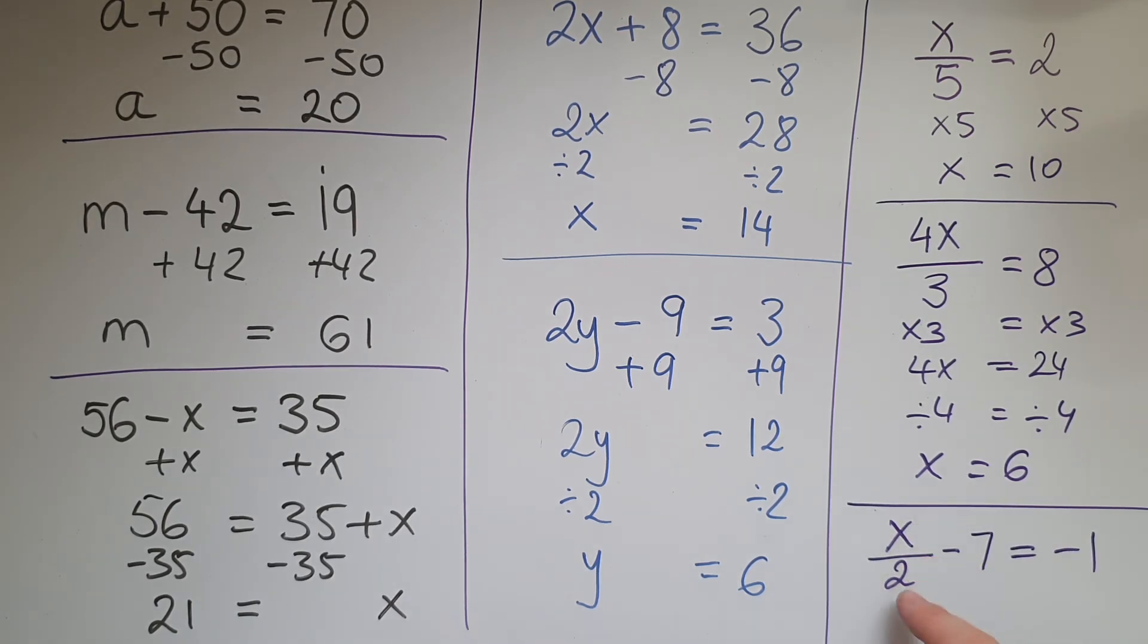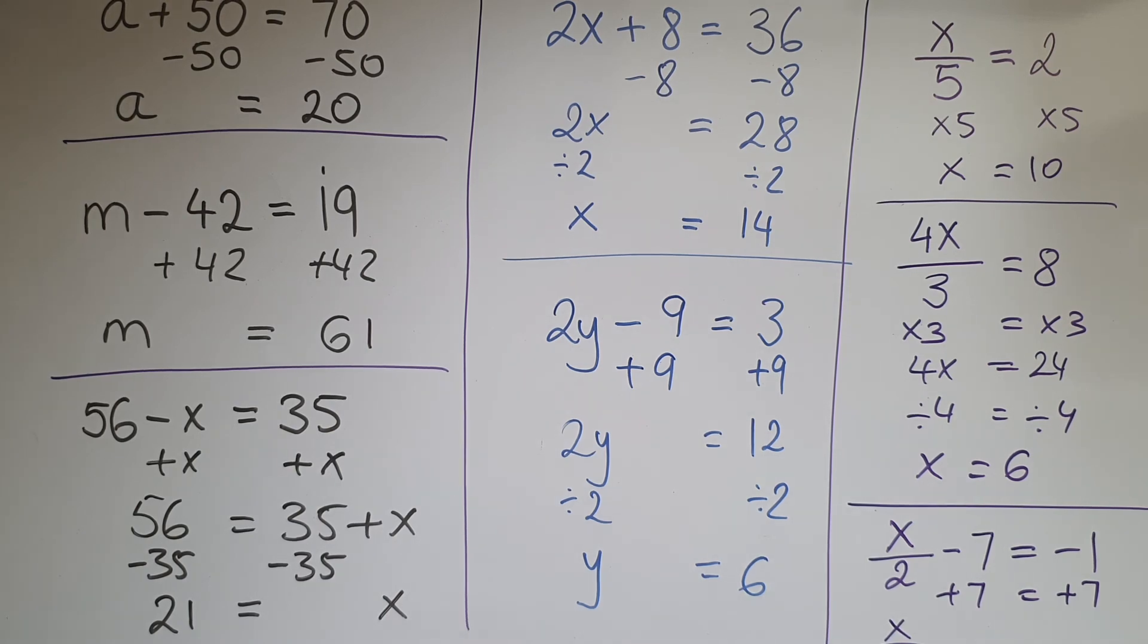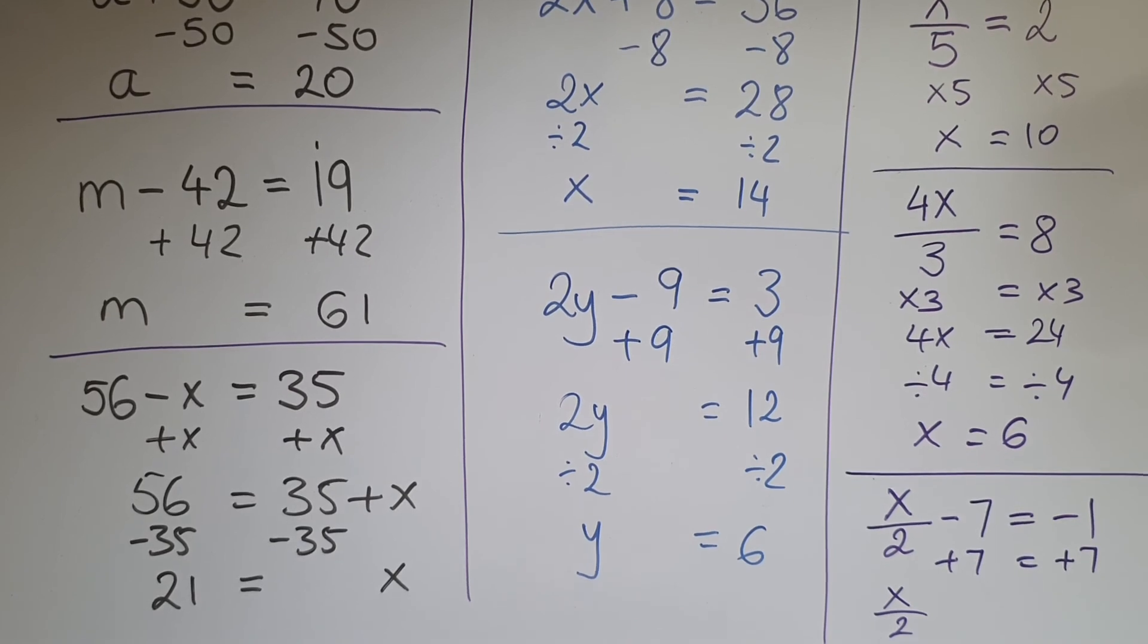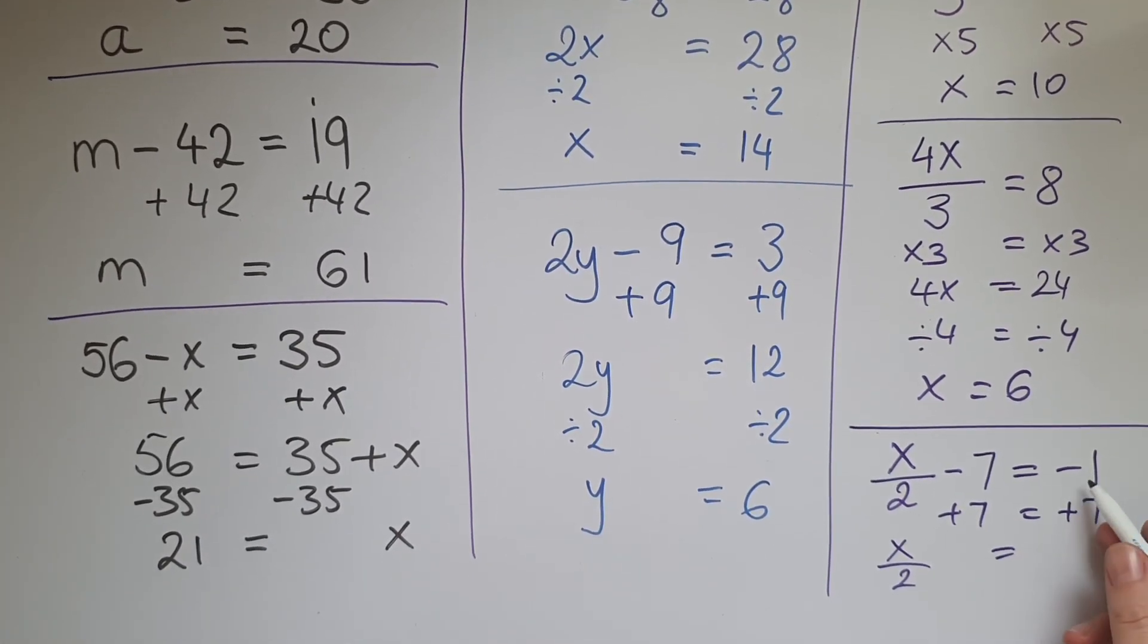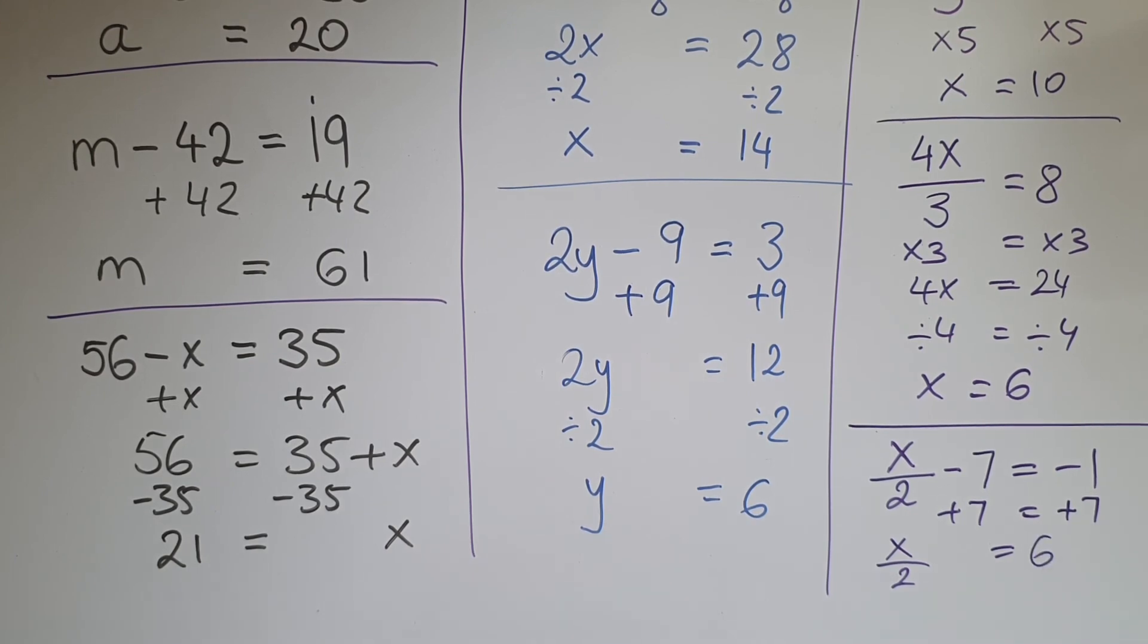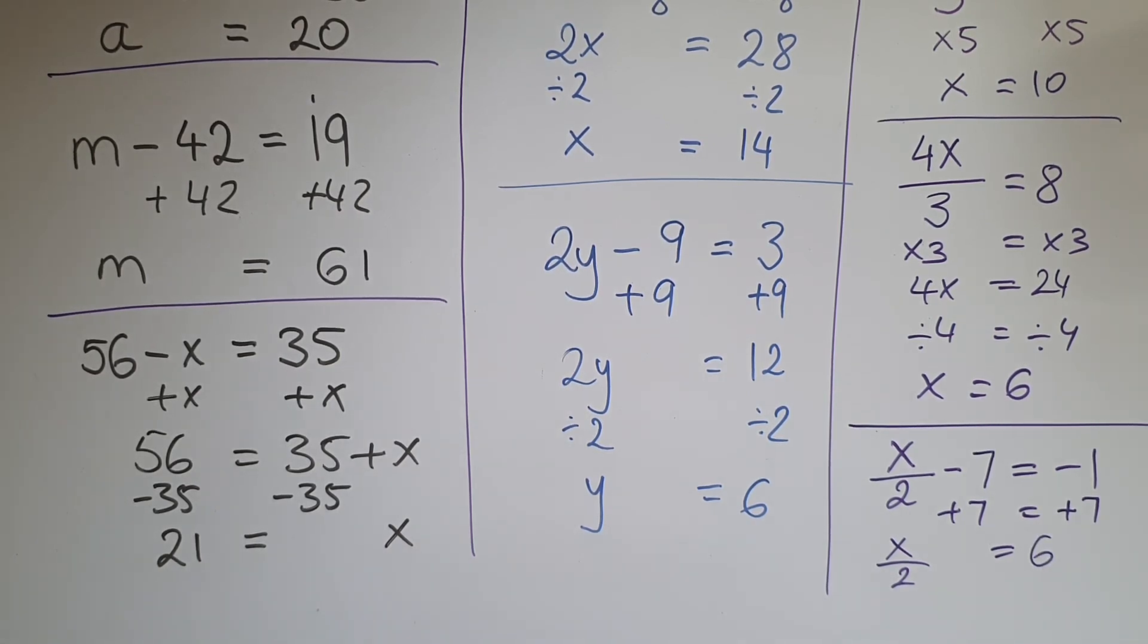Okay so we've got x divided by 2 take away 7 equals negative 1. So we're going to add 7 both sides so we can eliminate that, aiming to get x on its own. So we just end up with x divided by 2 on this side, and we have negative 1 add 7 which gives us 6 on this other side.